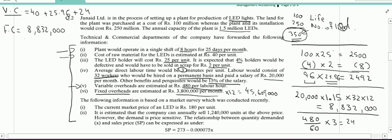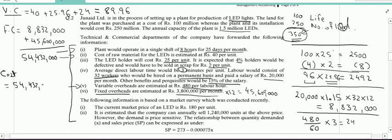So, my total fixed cost will be 8832000 and 45600000 which is in total 54,432000. So, my cost function will be - let me total this 40 plus 25.96 plus 24 is 89.96. Therefore, my cost function will be a fixed cost of 54,432000 plus 89.96, this is variable cost per unit, multiplied by number of units.